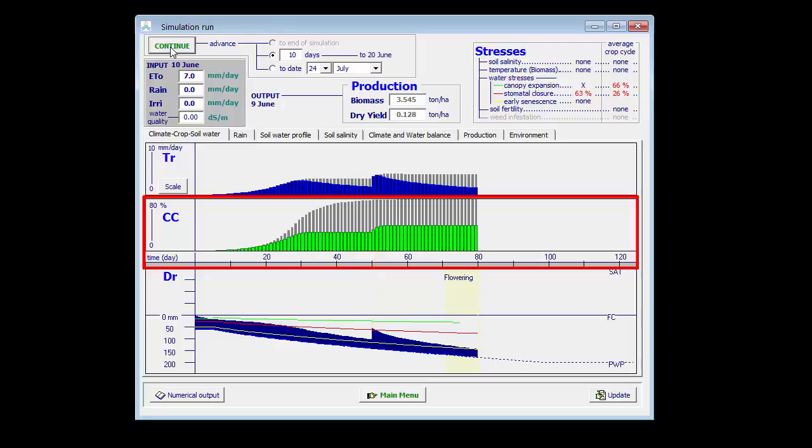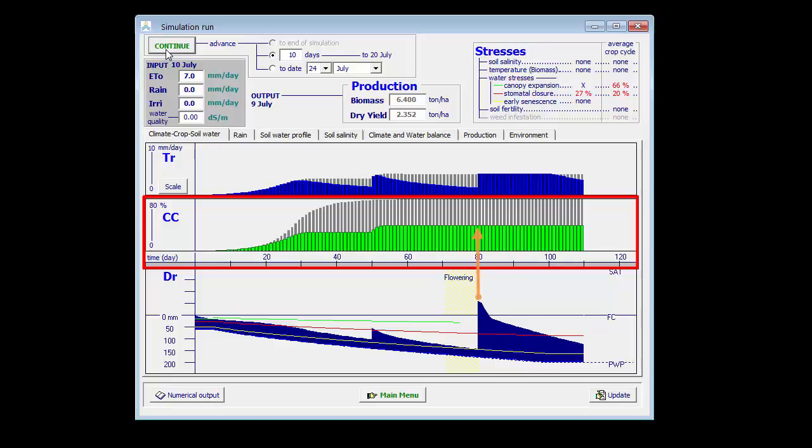However, adding water after mid-flowering will no longer adjust canopy development, because the crop now uses the assimilates to fill the grains and not to make new leaves. Even if I apply an irrigation of 200 mm, the crop will not grow anymore.